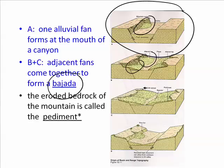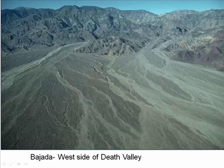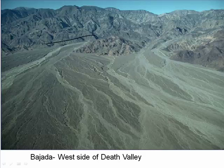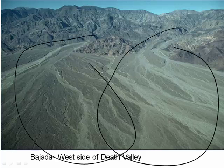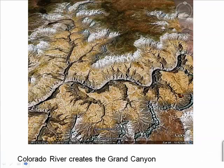Notice also that the cliff of the range is retreating, leaving behind gradual bedrock covered with sediment — that gradual bedrock is called pediment. Here we have a bahada in west Death Valley. You can see one alluvial fan coming out and joining another alluvial fan, coalescing to become a bahada.